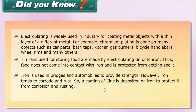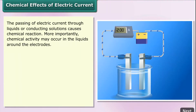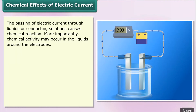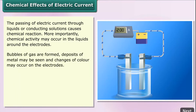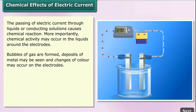Iron is used in bridges and automobiles to provide strength. To protect it from corrosion and rusting, electroplating is applied. The passing of electric current through liquids or conducting solutions causes chemical reactions. Chemical activity may occur in the liquids around the electrodes — bubbles of gas are formed, deposits of metal may be seen, and changes of color may occur on the electrodes.